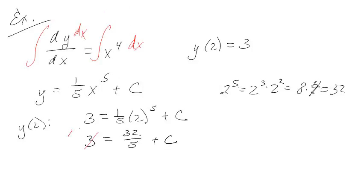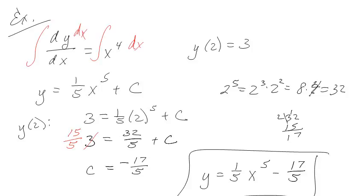Plus c, so I've got 15 fifths and I don't know, 32 minus 15 is some number. So c, I can do calculus, just not math. Negative 17 fifths, I believe. That looks beautiful. So my final solution is y is equal to 1 fifth x to the fifth minus 17 over 5. And there's a pretty standard initial value problem. Alright, I'm going to give you one more.